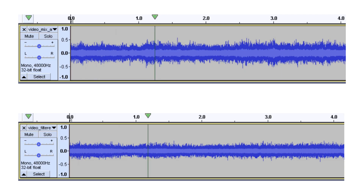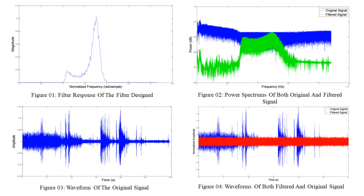This is the noisy raw audio captured. And this is the filtered result. Figure 1 shows the adaptive filter designed using the previously mentioned procedure. The power spectrums of both the original and filtered signal are shown in Figure 2. Figure 3 is the waveform of the original signal, and Figure 4 shows the waveforms of both the filtered and original signal.